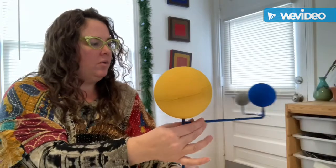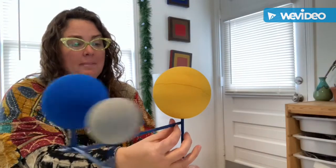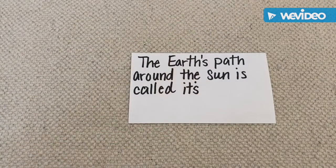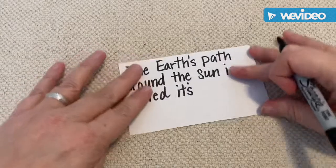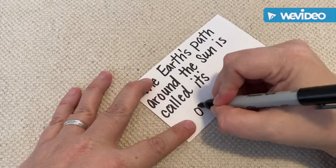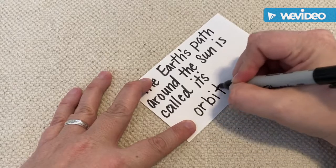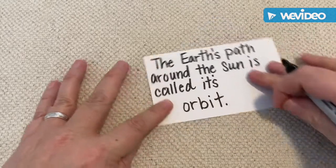The Earth travels around in the same path, and that path is called an orbit. The Earth's path around the Sun is called its orbit.